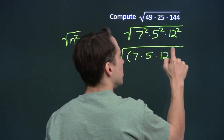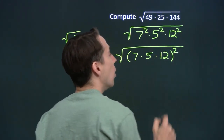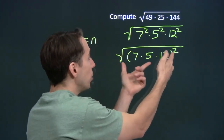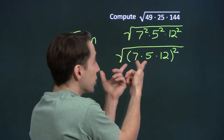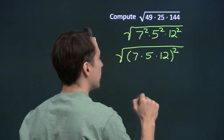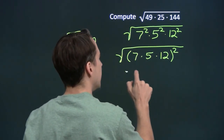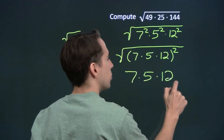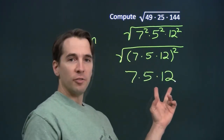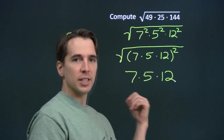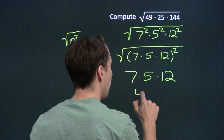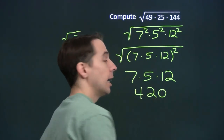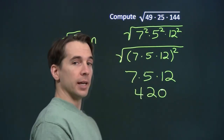We've turned this into a problem we know how to handle. We know how to take the square root of a perfect square. The square root of the square of 7 times 5 times 12 is just 7 times 5 times 12. 5 times 12 is 60, and 60 times 7 is 420. And we're on to the next problem.